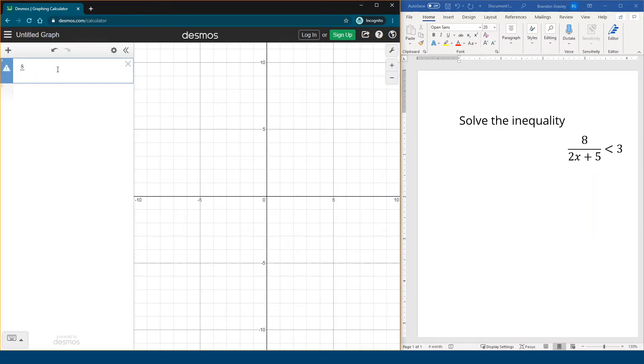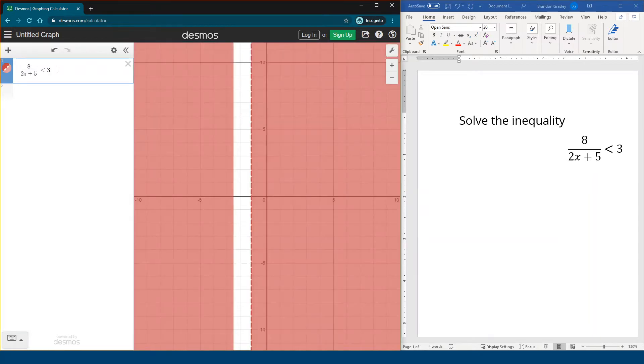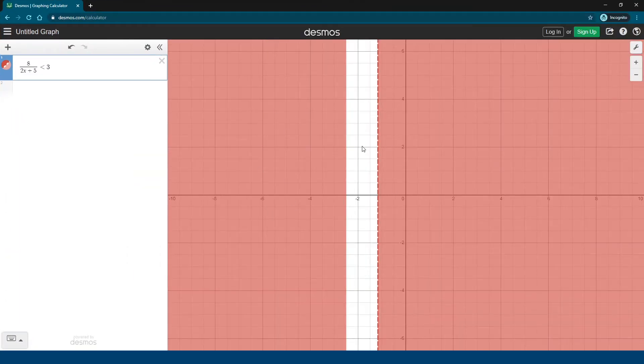So 8 divided by 2x plus 5. Now there's that curve. The function, like f of x is 8 over 2x plus 5. And when is that less than 3? Okay, we get these huge bars here that sort of show us portions of the graph. There's a dashed line there. This is actually a little bit difficult to understand.